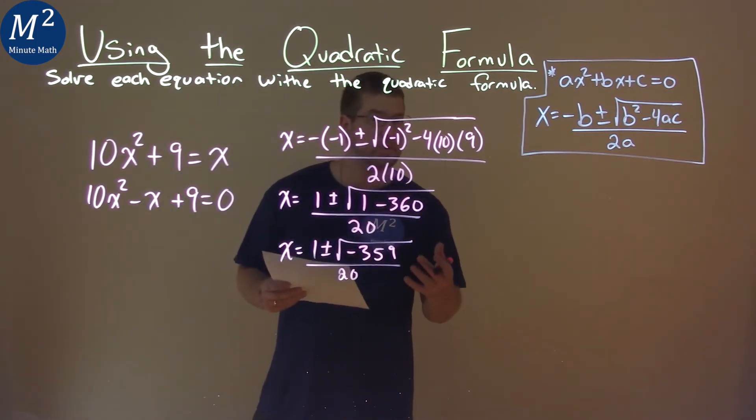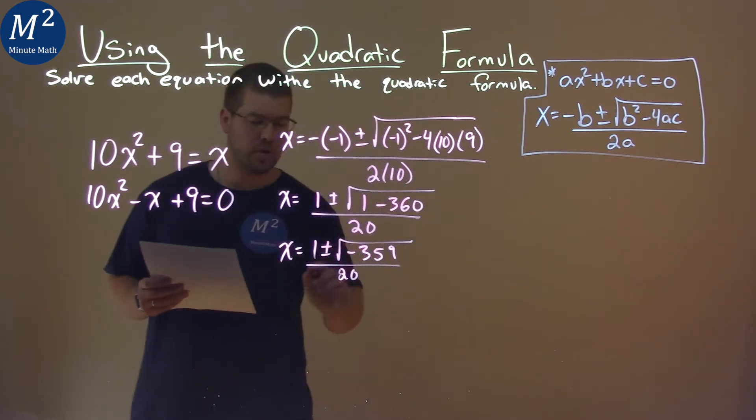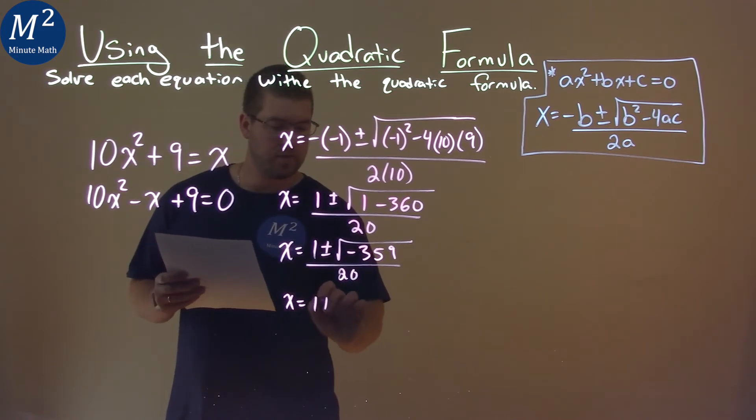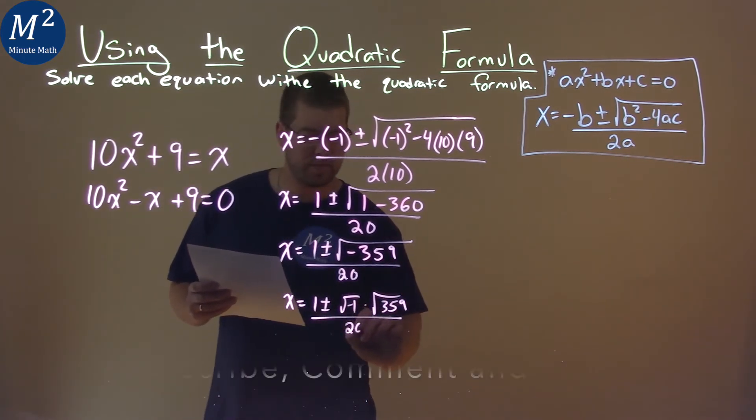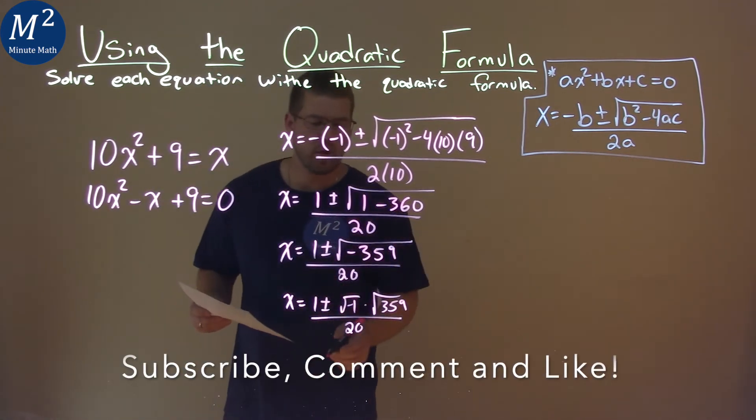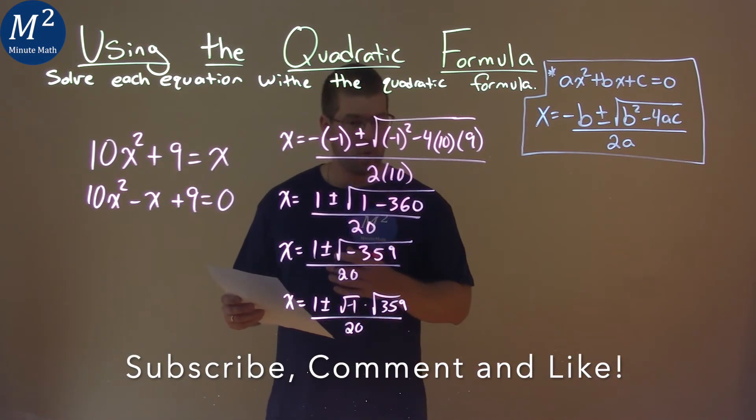Well, we know we can't take the square root of a negative number. So we can break this down: 1 plus or minus the square root of negative 1 times the square root of 359, all over 20. Well, square root of 359 doesn't break down any more.